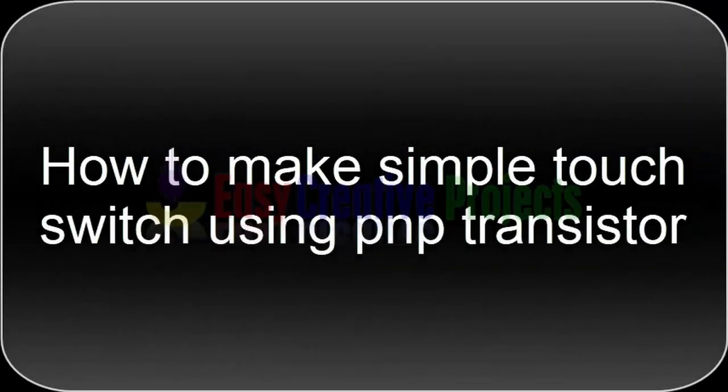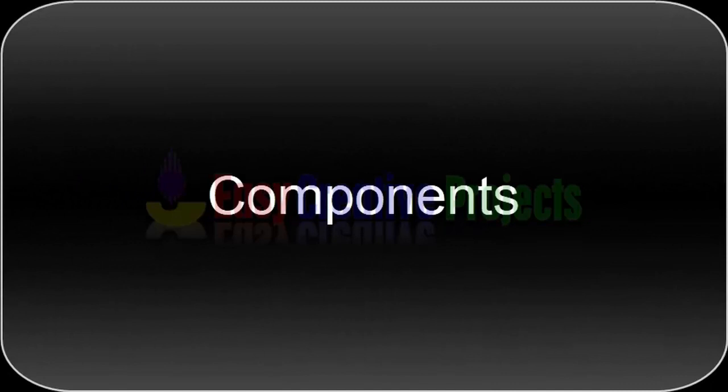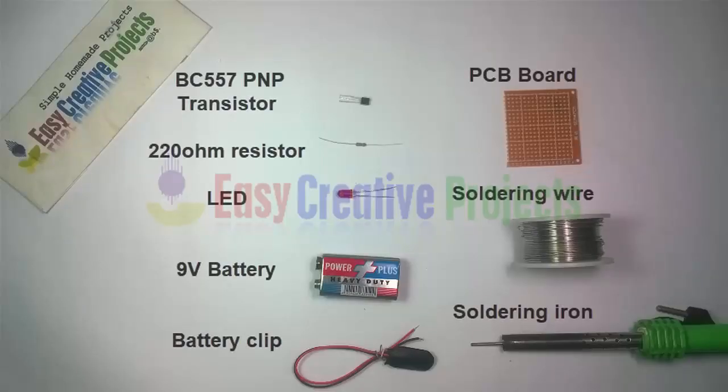Hello friends, today we learn how to make a simple touch switch using a PNP transistor. For this project we need: BC557 PNP transistor, 220 ohm resistor, LED, 9 volt battery, battery clip, PCB board, soldering wire, and soldering iron.